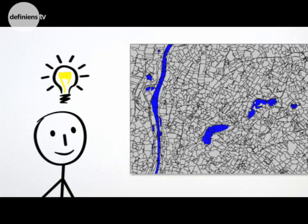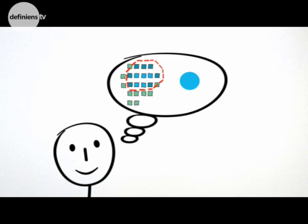Pixels are aggregated, resulting in image objects. Next, you apply the rule that water areas are a bluish color to single out water areas.